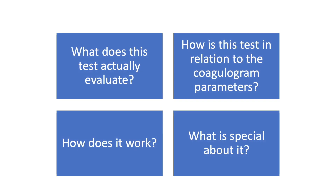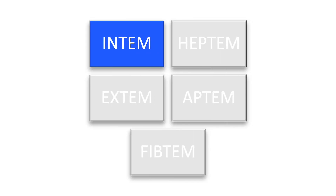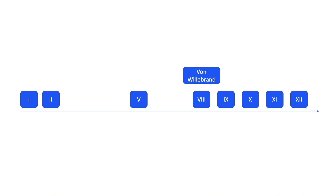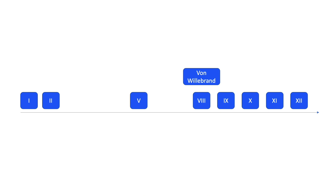For each test, we have four questions to ask: What does this test actually evaluate? How does this test stand in relation to coagulogram parameters? How does it work? And what is special about this test? The INTEM test is used as a screening test for evaluation of the intrinsic pathway of the coagulation process, or the effect of coagulation factors 12, 11, 9, 8, 10, 5, 2, 1, and von Willebrand factor. The INTEM test is similar to APTT on the coagulogram.